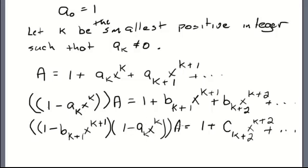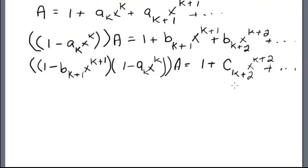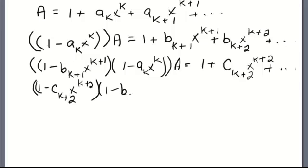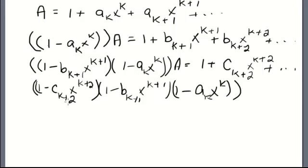The product of those terms is the multiplicative inverse of A. If we assume there is a non-zero term somewhere in here, we can eliminate that by doing the same process. Assuming c_{k+2} is non-zero, we repeat: one minus c_{k+2} times x to the k+2, times one minus b_{k+1} times x to the k+1, times one minus a_k times x to the k. We're building up our multiplicative inverse. By this product we get rid of that term, and then if there's a non-zero term at k+3 we can get rid of that, and k+4, k+5, and we can keep on doing that process on and on and on ad nauseum.